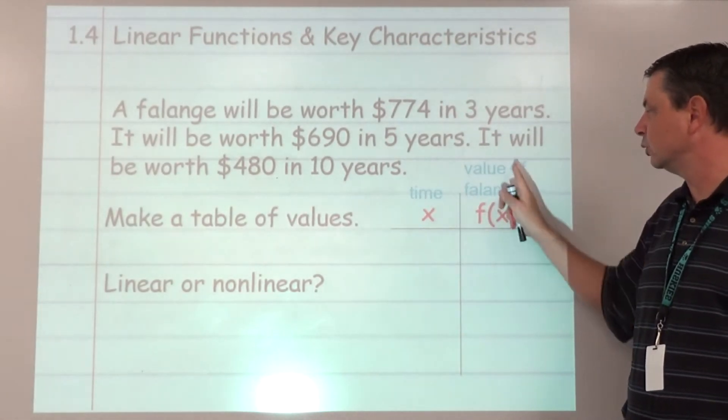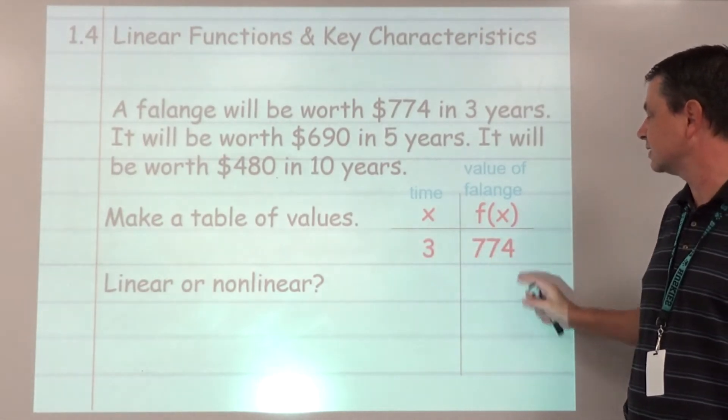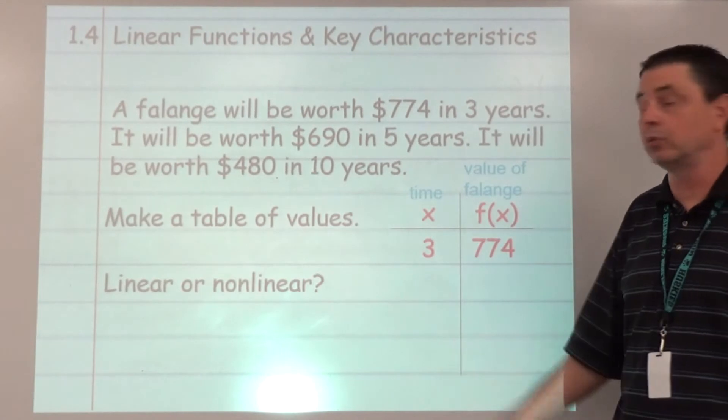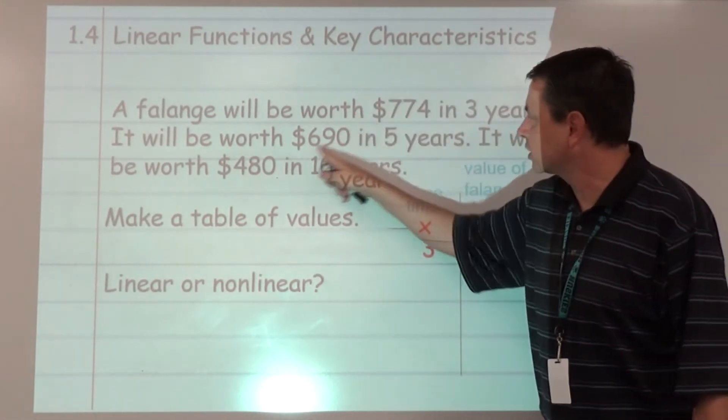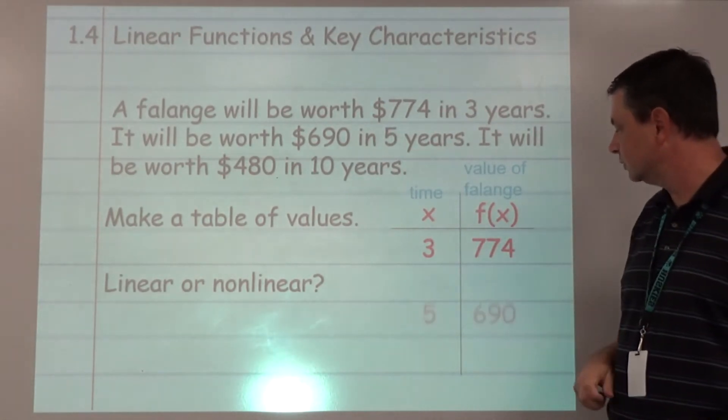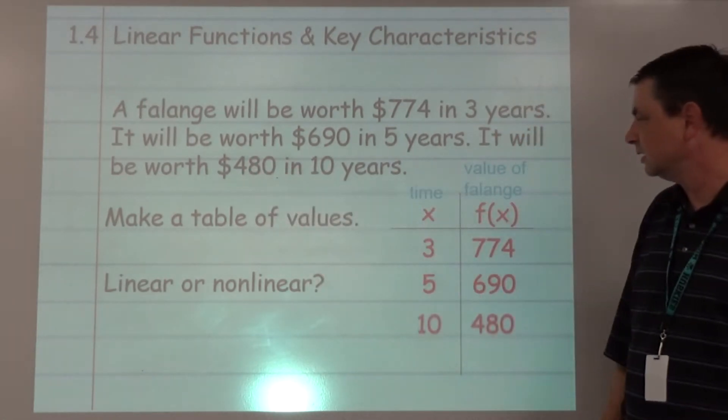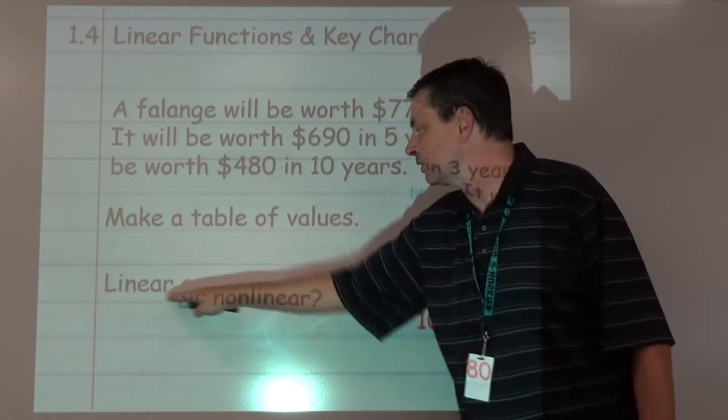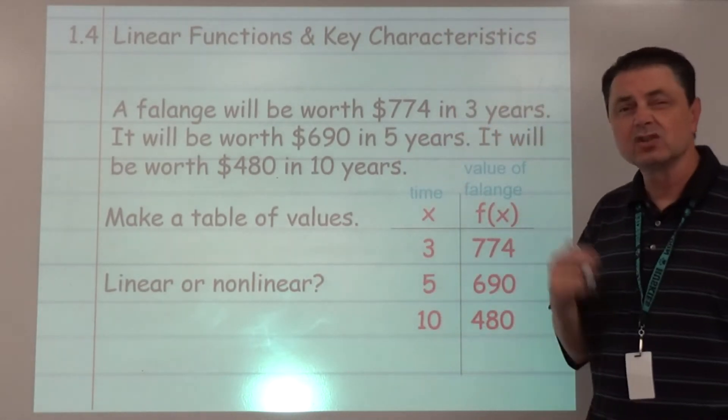Producing an output value, so (3, 774) if we think of that in terms of a point on a graph. Then $690 in five years, and in ten years $480. We want to see if this is going to be a linear or nonlinear situation.